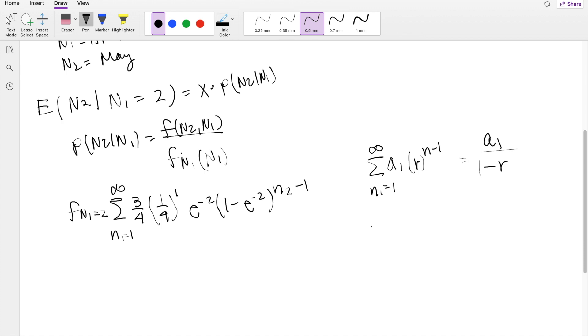So knowing that, we can actually figure out what A1 in our case is. When N1 is equal to 1, you get 3 fourths, times 1 fourth, e to the negative 2, and when you plug in 1 here, this whole thing becomes 0.